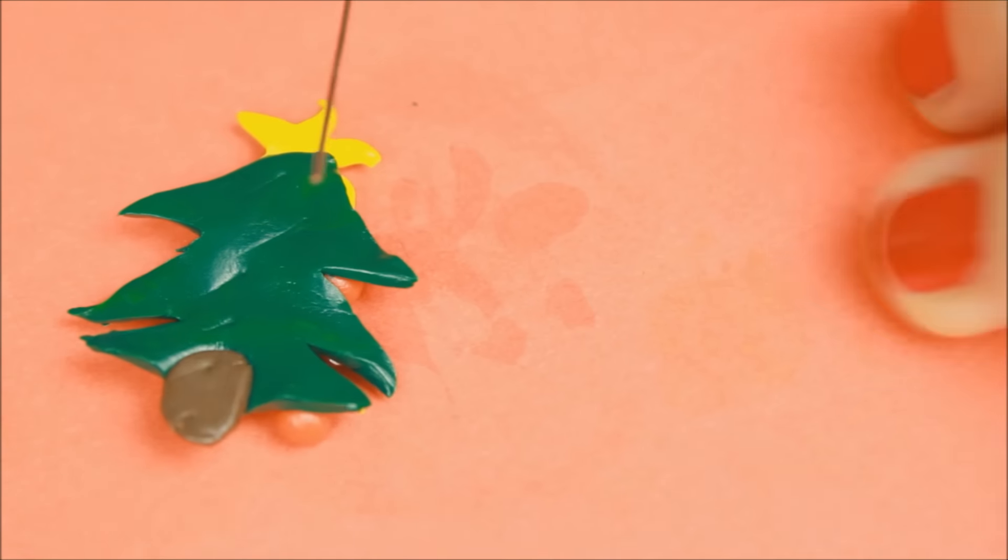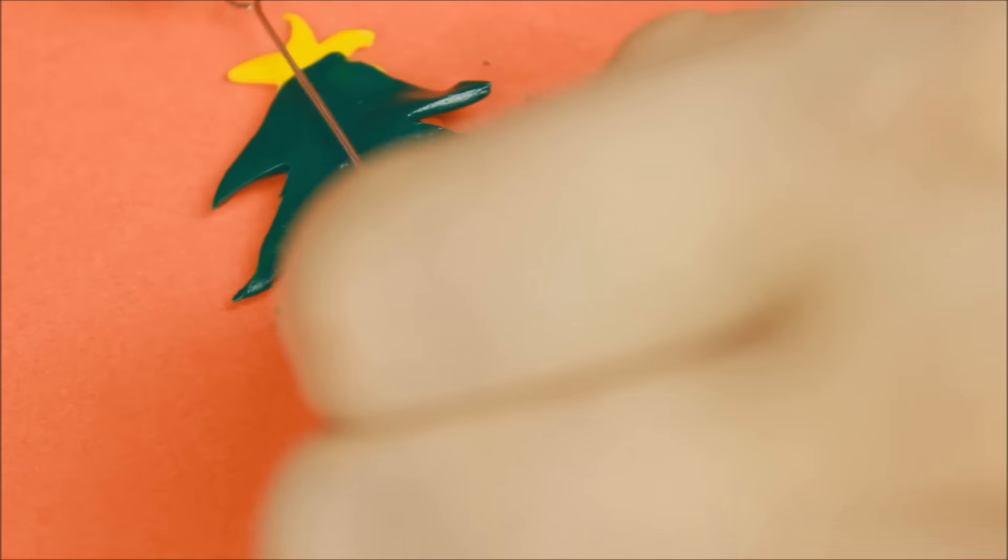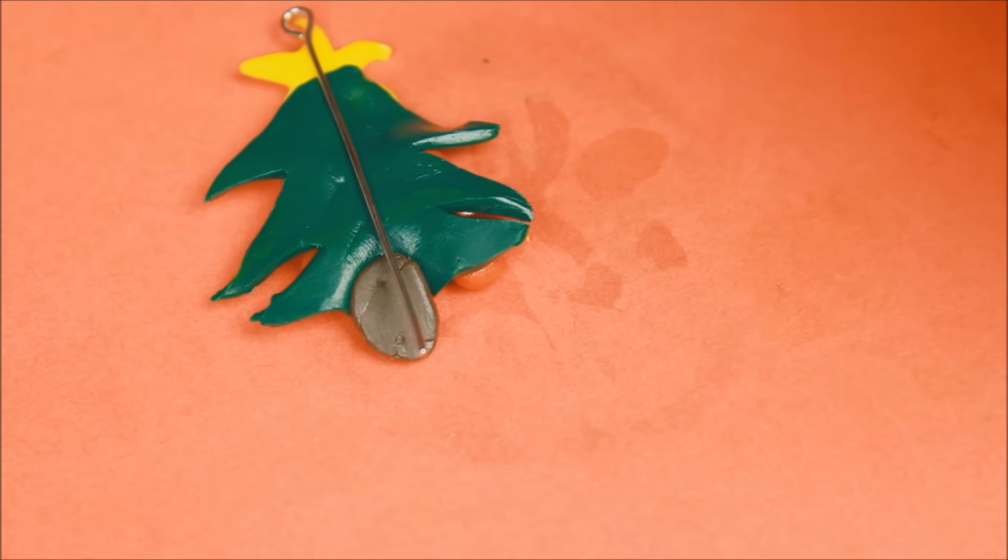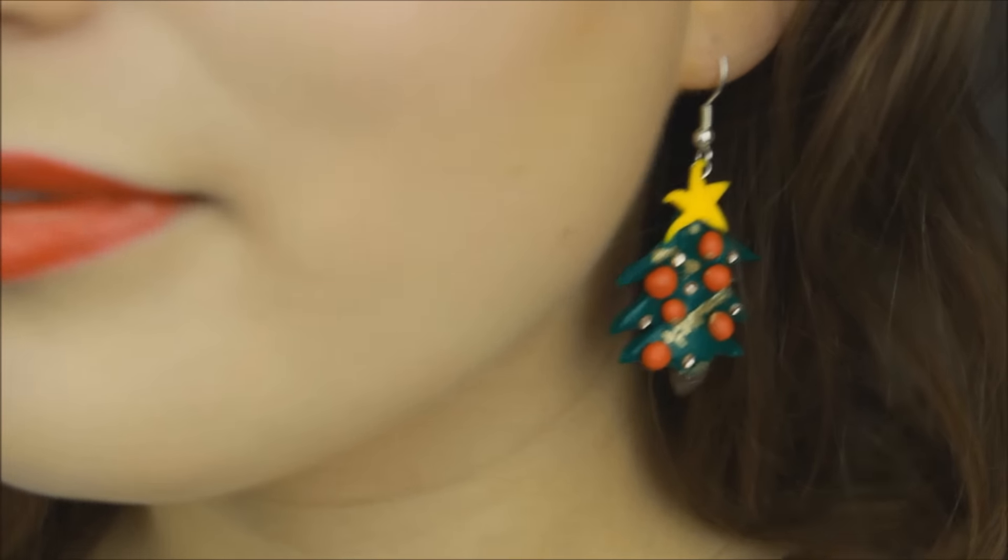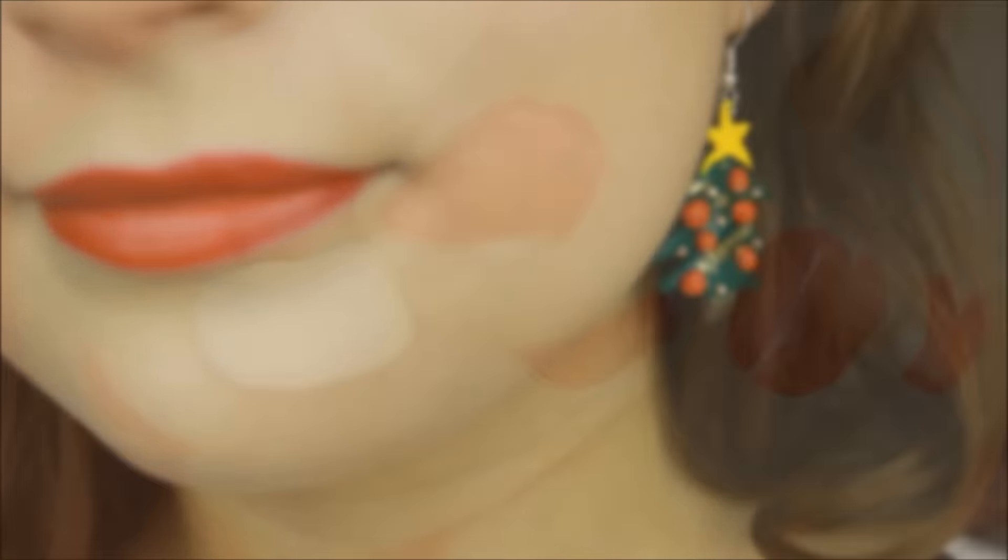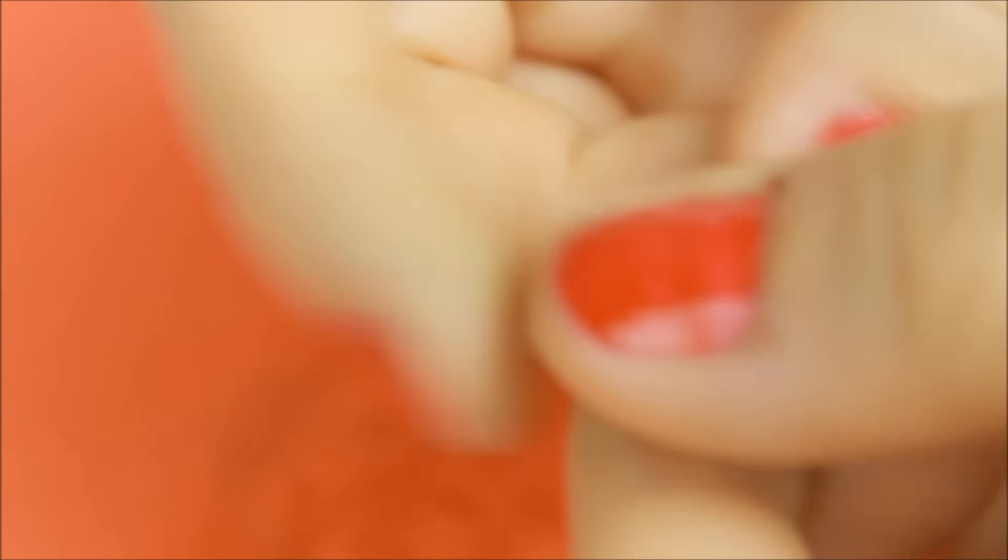Jetzt könnt ihr den Baum nehmen und umdrehen. Der ganze Baum muss ja auch halten, so als Schmuckstück. Deshalb nehme ich so eine Kettelniete oder so einen Kettelstab und drücke das hinten fest. Und dann kann man ein Stück Fimo nehmen und das einfach wieder oben drüber legen. Und später, wenn er dann fertig ist, würde der Baum so aussehen. Aber ich zeige euch noch, wie das mit dem Backen und so geht. Jetzt kommt erstmal das zweite Design.